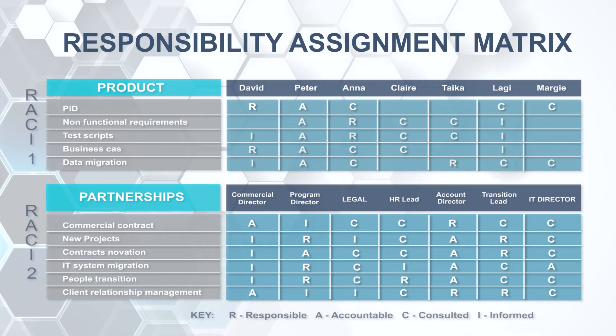In RACI 2, the commercial director and account director have shared accountability for signing the deal, achieving innovations and rating the partnership for new business and new projects. Each other director has signed responsibilities for areas within their specific domain — HR, IT or legal. A strategic RACI like this will be used for board level communication and will almost certainly have more detailed RACIs sitting behind it in the detailed implementation plans. The important takeaway is that you can apply the RACI technique in many different circumstances to help achieve many different goals.